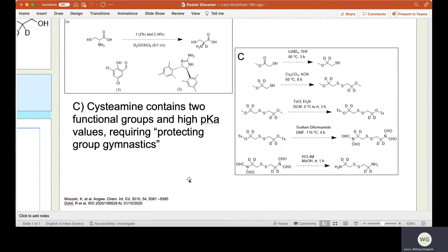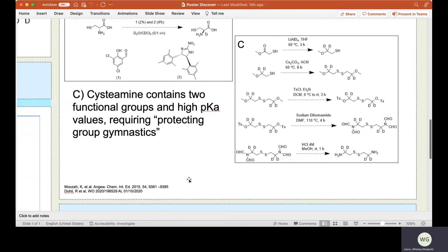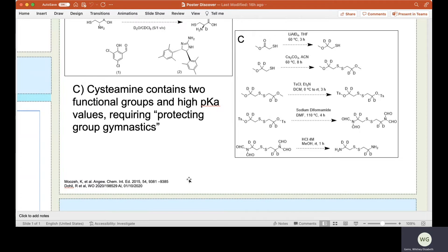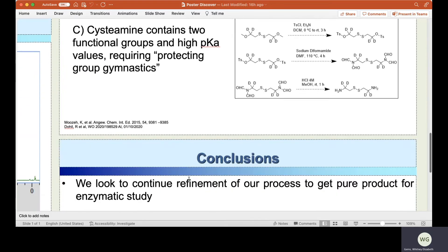Lastly, we hope to deuterate cysteamine, but the challenge here is the two functional groups present along with the high pKa of the compound. This process will require a lot of protecting group gymnastics and have an extensive number of synthesis steps.